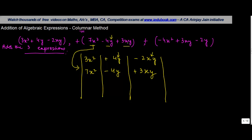The next one, again, minus 4x square. Where is x square? x square is here, so I write it as minus 4x square plus 3xy.